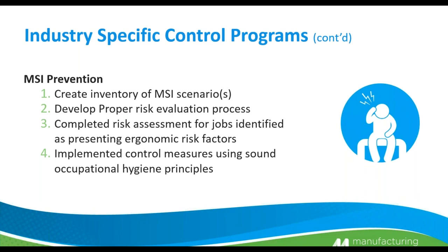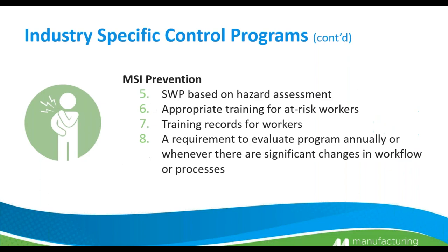MSI — Musculoskeletal Injury Prevention. Create an inventory of MSI scenarios and develop proper risk evaluation processes, which differ somewhat from a standard hazard assessment and involve specific occupational hygiene principles. Develop a risk assessment for jobs identified as presenting ergonomic risk factors — this could be based on observation, historical injury data, or known risk activities such as lifting heavy objects, twisting with objects, or repetitive movements. Implement control measures using sound occupational hygiene principles, with safe work practices based on hazard assessments. Appropriate training and training records are required, and the program must be evaluated yearly or when there are significant changes to workflow or processes.